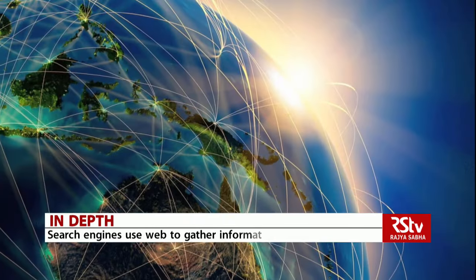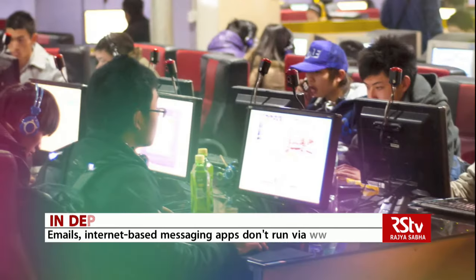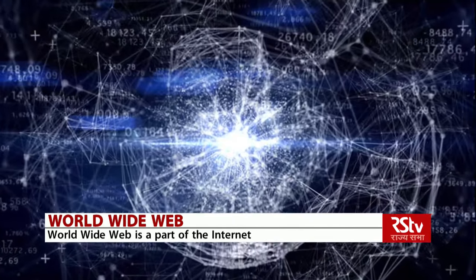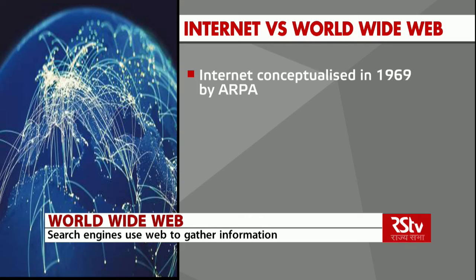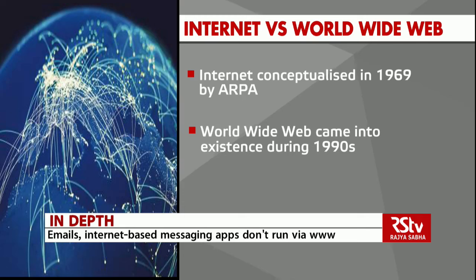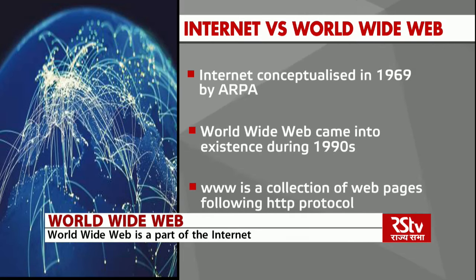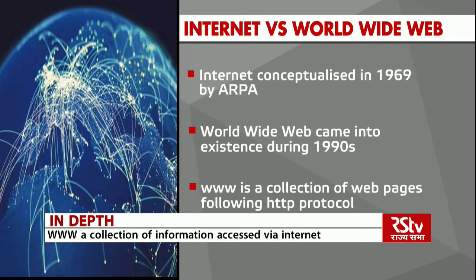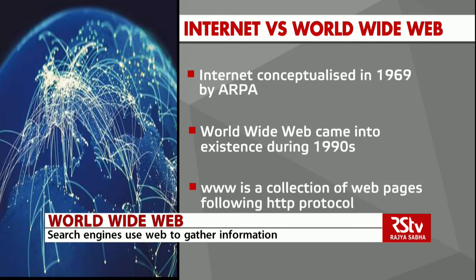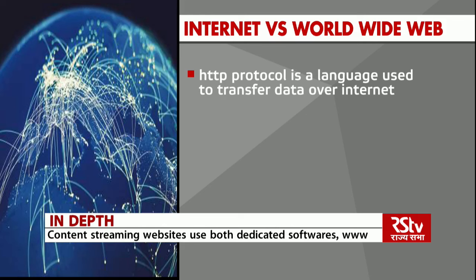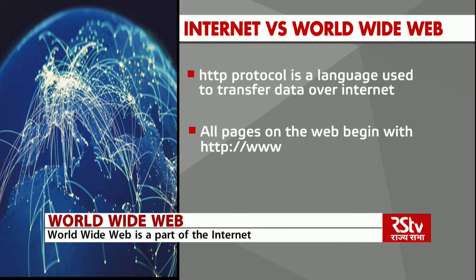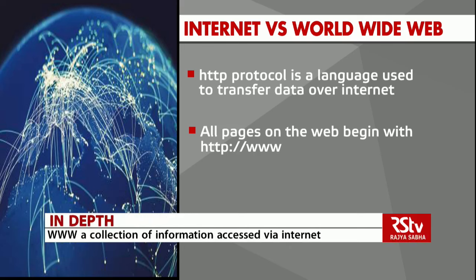The World Wide Web is a part of the internet, which is used for many other applications. For example, emails and messaging apps run through the internet and not the World Wide Web. The internet was conceptualized during 1969 by the Advanced Research Projects Agency, while the World Wide Web was initialized much later, during 1990. The internet is a comprehensive network of computers, while the World Wide Web is a collection of web pages following the HTTP protocol, accessible from any part of the world. All pages that are part of the World Wide Web begin with HTTP followed by colon, two backslashes, with 'www' being an abbreviation for World Wide Web.